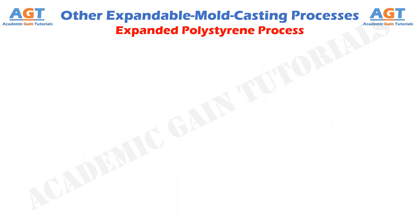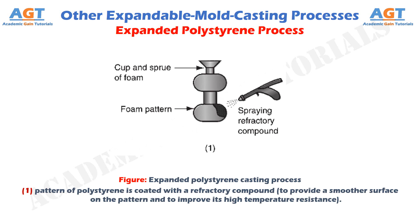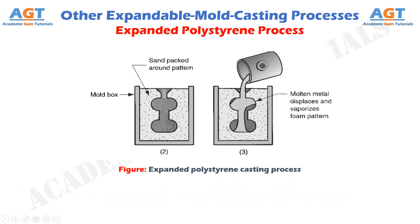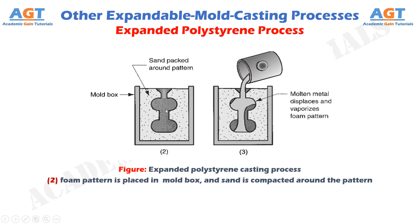We are going to observe the steps of expanded polystyrene casting process in the next few figures. Figure 1 shows the first step, where a pattern of polystyrene is coated with a refractory compound in order to provide a smoother surface on the pattern and to improve its high temperature resistance. Figure 2 shows the second step, where the foam pattern is placed in a mold box and sand is compacted around the pattern.